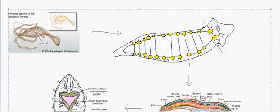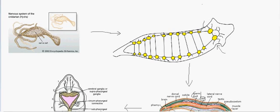Real cephalization begins in flatworms — phylum Platyhelminthes. In planaria, there are two photo-sensitive areas that can detect light presence or absence, and two primitive pinnae serving as ears. You can see the nervous tissue beginning to concentrate towards one side in two visible blobs, and the head region is also starting to develop.